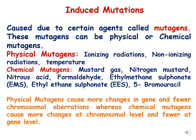Physical mutagens can be ionizing radiations, non-ionizing radiations, or temperature. Chemical mutagens are chemicals which cause mutations. Some examples are mustard gas, nitrogen mustard, nitrous acid, formaldehyde, ethyl-methane-sulfonate (EMS), ethyl-ethane-sulfonate (EES), 5-bromouracil, and ethidium bromide.